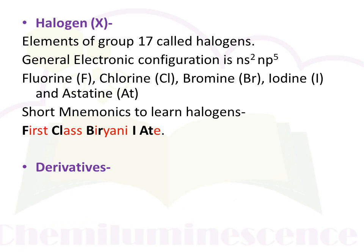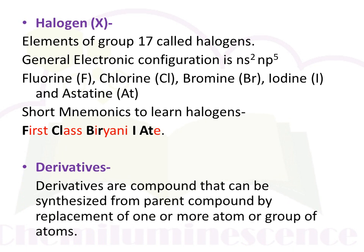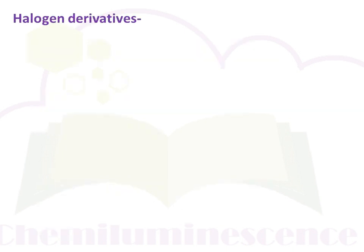Next: what is a derivative? Derivatives are compounds that are synthesized from a parent compound by replacement of one or more atoms or a group of atoms. We have just seen what a halogen is — it is represented by capital X. And derivatives are compounds which are synthesized from a parent compound by replacement of an atom or a group of atoms.